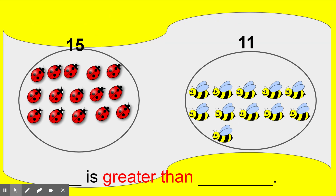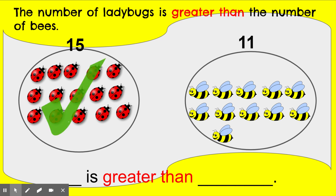So now we have to decide which one is greater, which one has more. In class when we work on numbers, we line them up and give them all a partner. The one that has extras — the ones that didn't have a partner — we know that group is greater than because it has more. Which one is the larger number? That will tell us which one is greater than. Yes, you are right. The number of ladybugs is greater than the number of bees. We say fifteen is greater than eleven.